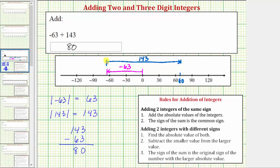Negative 63 plus 143 equals positive 80. I hope you found this helpful.